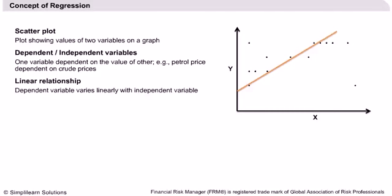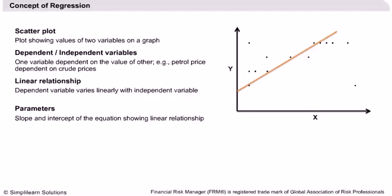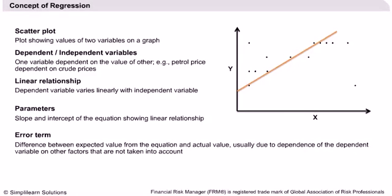In other words, we approximate the parameters of the line — the slope and coefficient — in such a way as to minimize the error terms, or the deviation of the actual values from the predicted values.